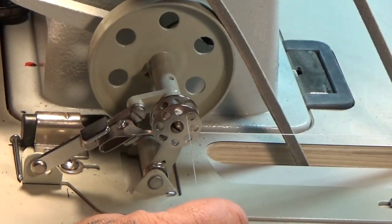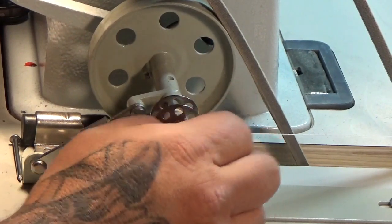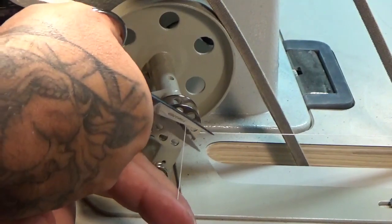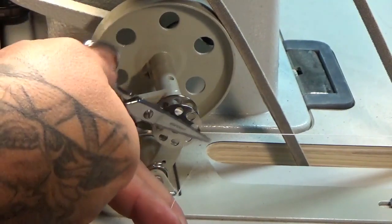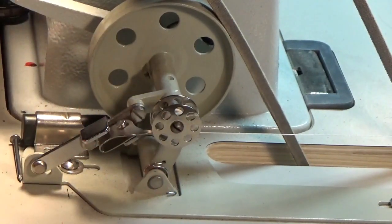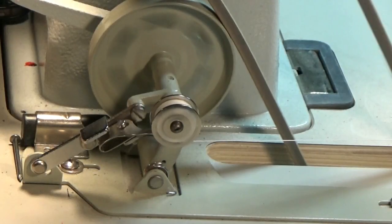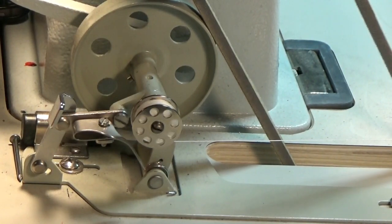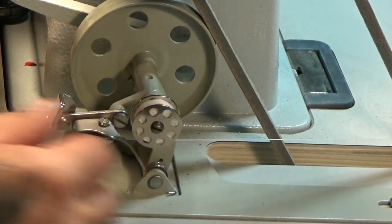After you have some turns on there, you can cut this part off and keep going. Towards the end, it'll actually stop itself, and you have a full bobbin.